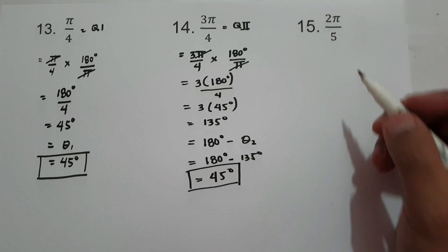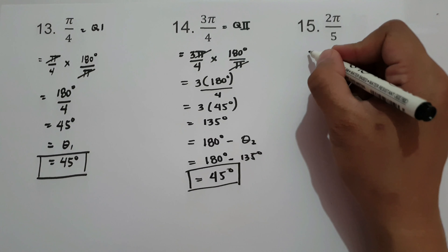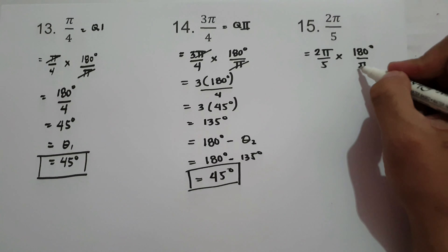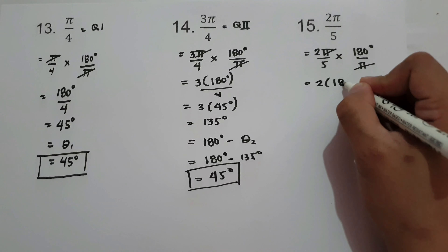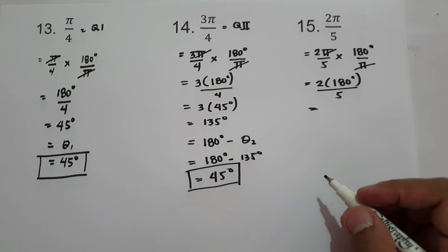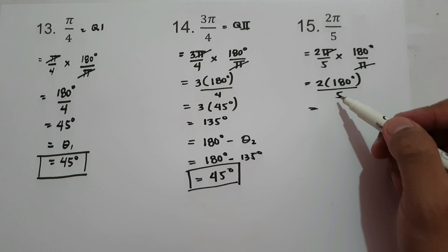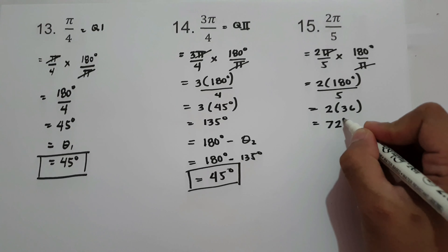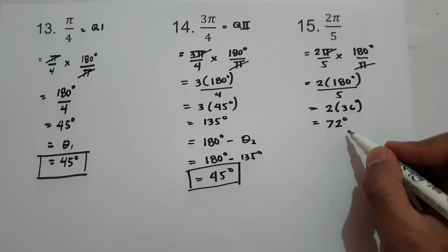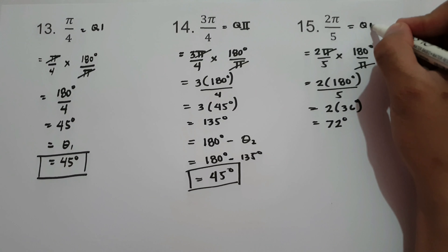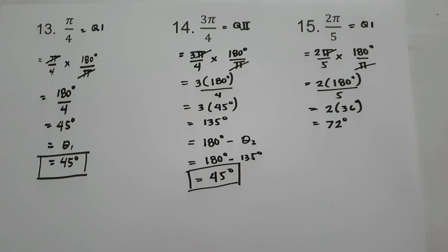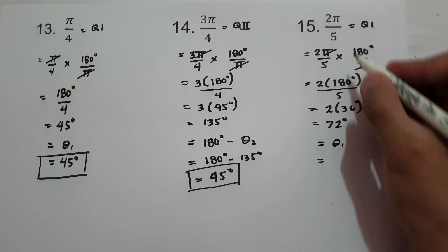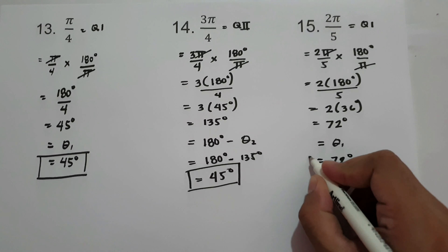What about number 15? We have 2π/5. Let us convert to degrees: 2π/5 times 180°/π. The π cancels, giving 2 times 180°/5. 180 divided by 5 is 36, and 2 times 36 is 72°. 72° is located in quadrant 1, between 0° and 90°. The reference angle in quadrant 1 equals the angle itself. Therefore, the reference angle of 2π/5 is 72°.